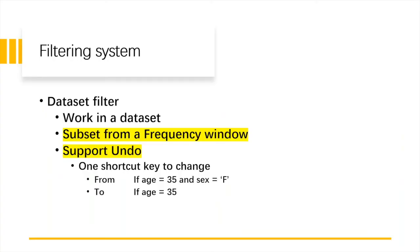Let me talk about the filter system. For the filter system, we have two kinds of filters. The first one is dataset filter, and the other one is library filter. First, the dataset filter, it only works in a dataset. Here, you can also mention subset from a frequency window. Maybe now you're confused with this one, but I will show a demo. You will get a better understanding. And for the filter, we support undo.